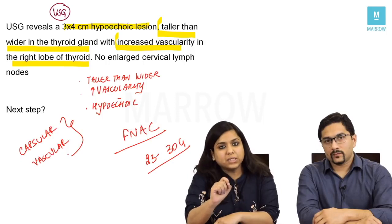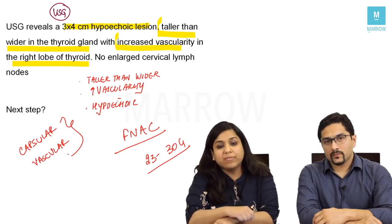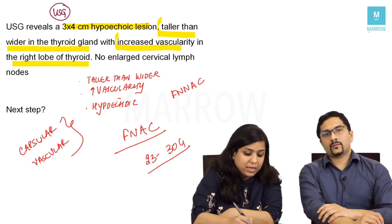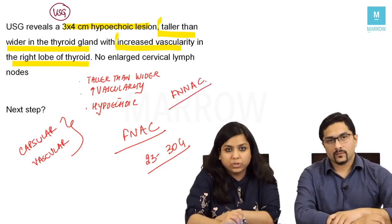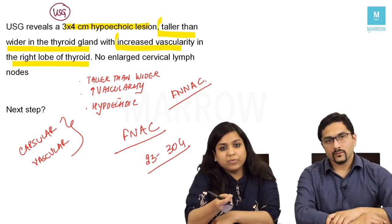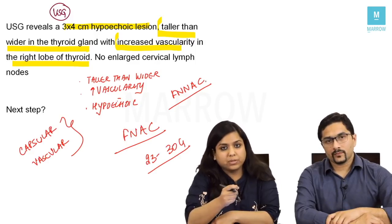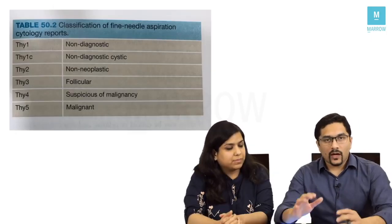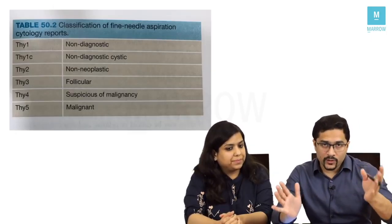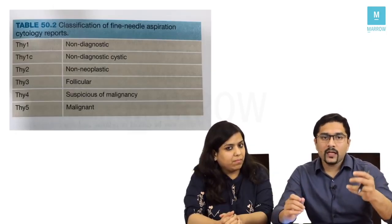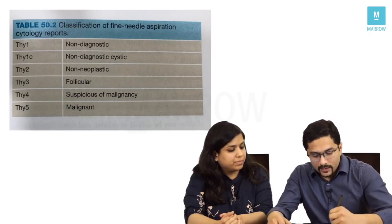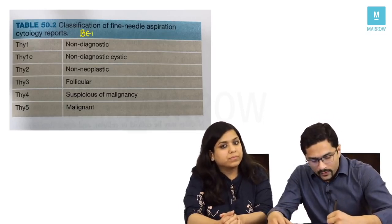In this patient we will do FNAC. There is also a latest technique called FNNAC — fine needle non-aspiration cytology — done for superficial lesions of breast and thyroid. After the FNAC, the pathologist reports the slide and assigns a number to it. This is known as the Bethesda classification for reporting thyroid FNAC specimens.